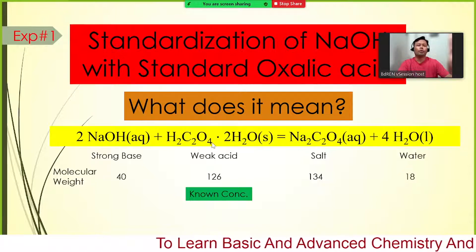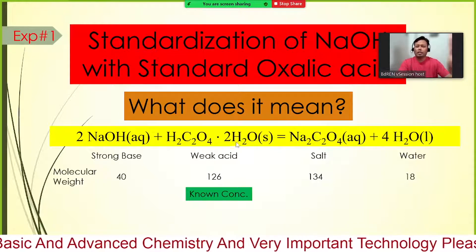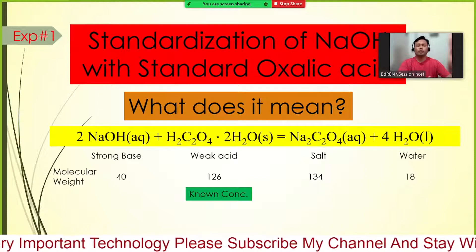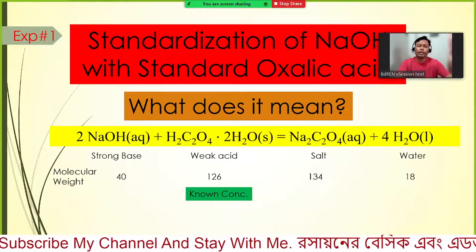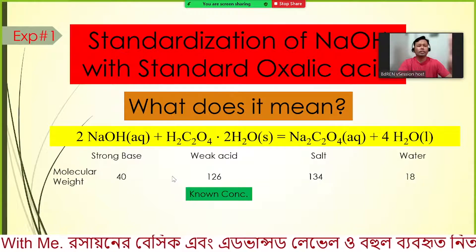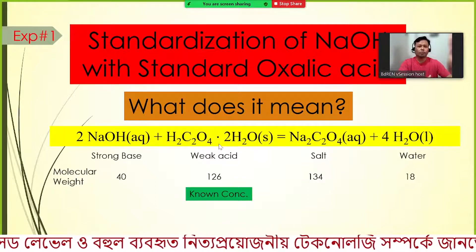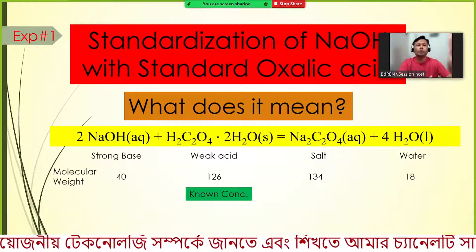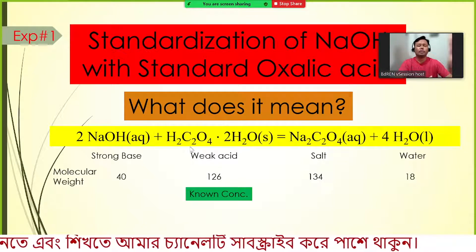If you heat the oxalic acid solid, the two moles of water will be removed and you will have only H₂C₂O₄ in the anhydrous state. But in standard form at room temperature, oxalic acid exists with two moles of water. So we consider the molecular weight of oxalic acid as H₂C₂O₄·2H₂O, which corresponds to 126 g/mol.